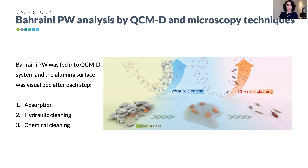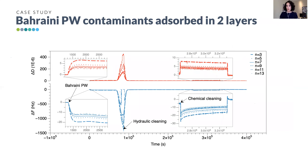We worked only with alumina surfaces — the most commercially used ceramic membrane material. The experimental steps were: first, adsorption by passing produced water through the QCM-D sensor until it saturated with contaminants; then hydraulic cleaning with Milli-Q water; and finally chemical cleaning with Helmanix. In the QCM-D results we observed a first fast drop in frequency — something adsorbing very quickly, reaching stability after about one hour. We called this the first layer of contaminants.